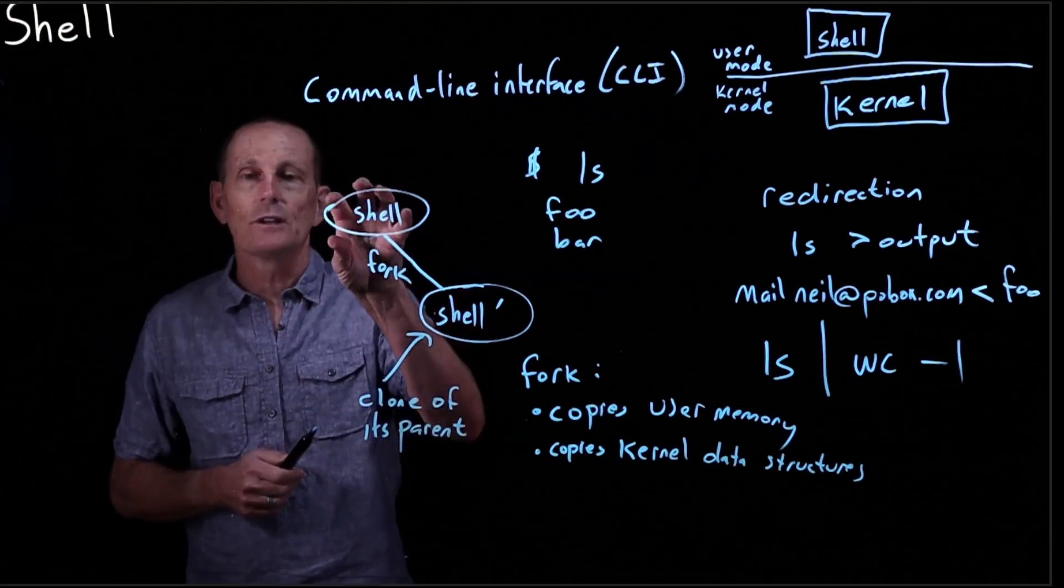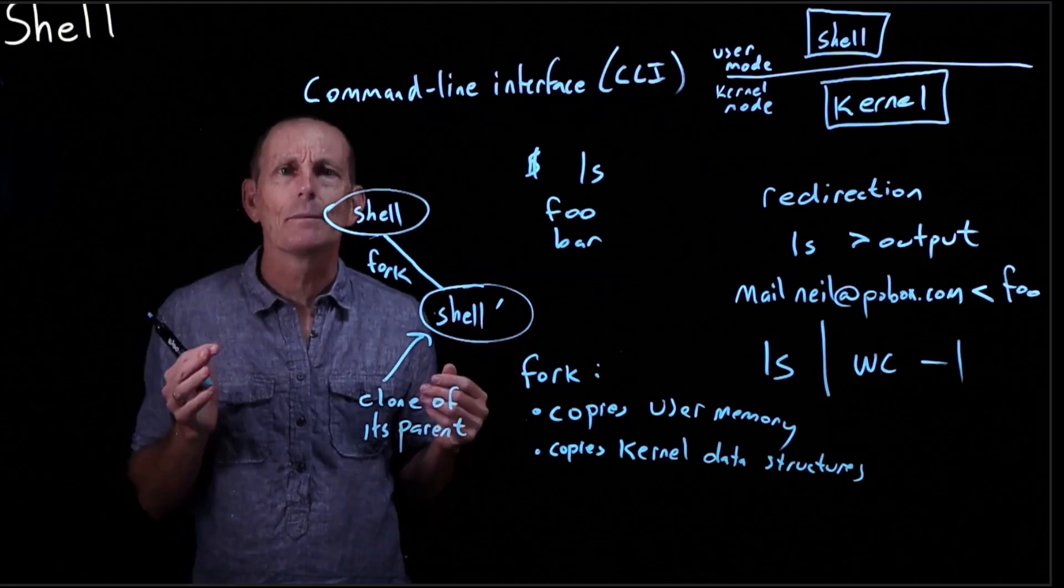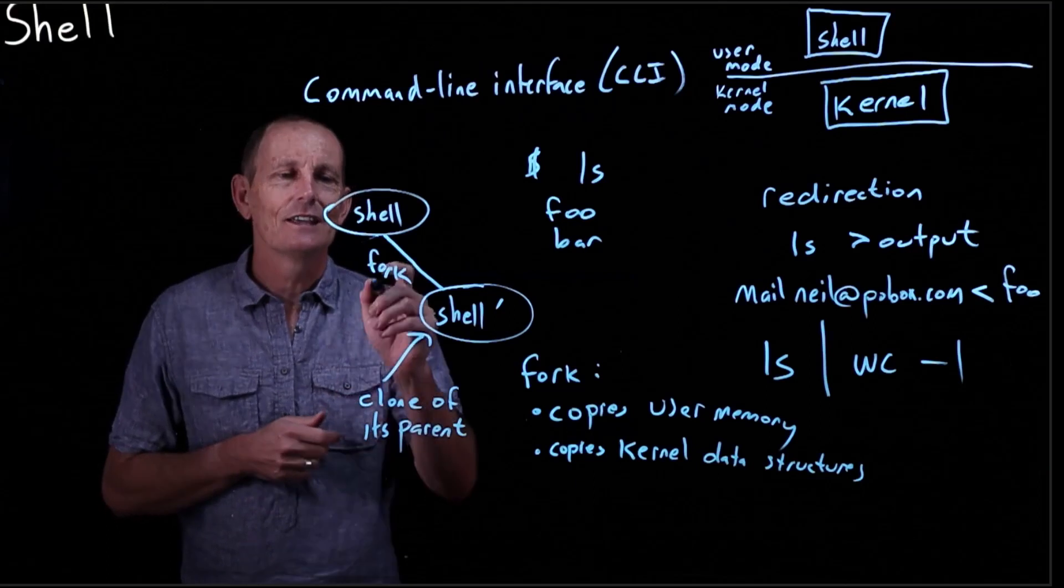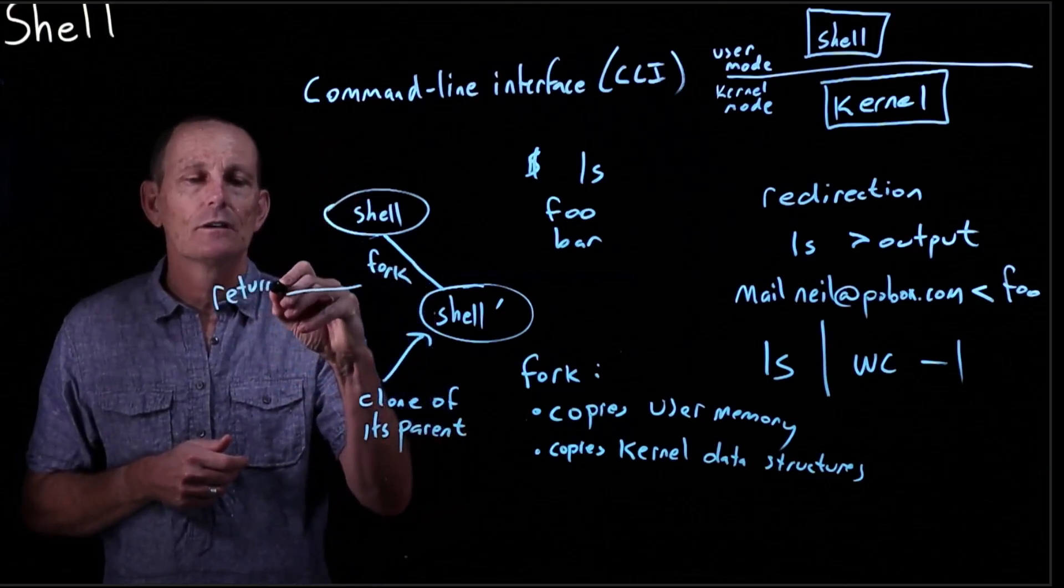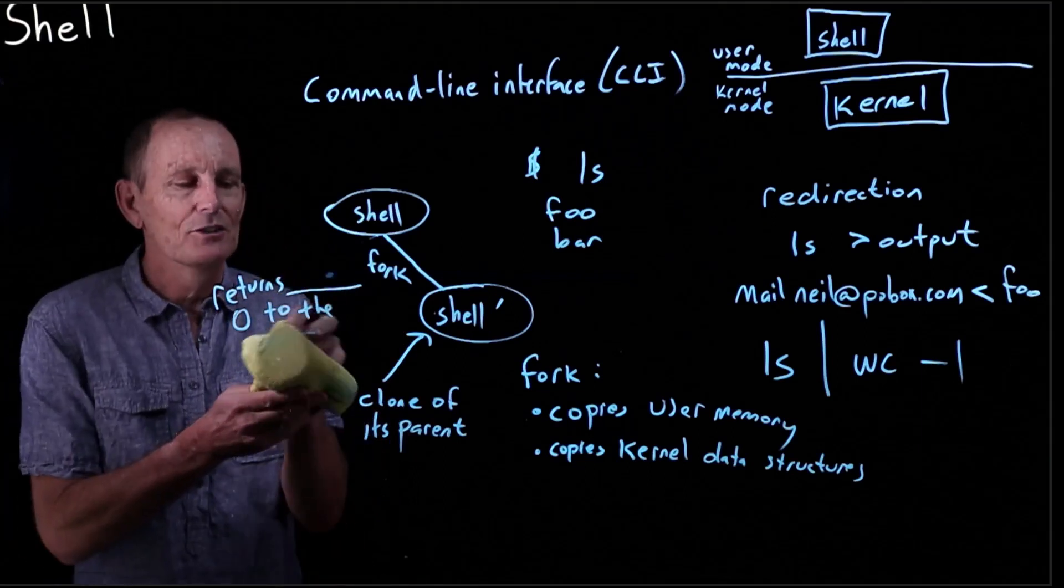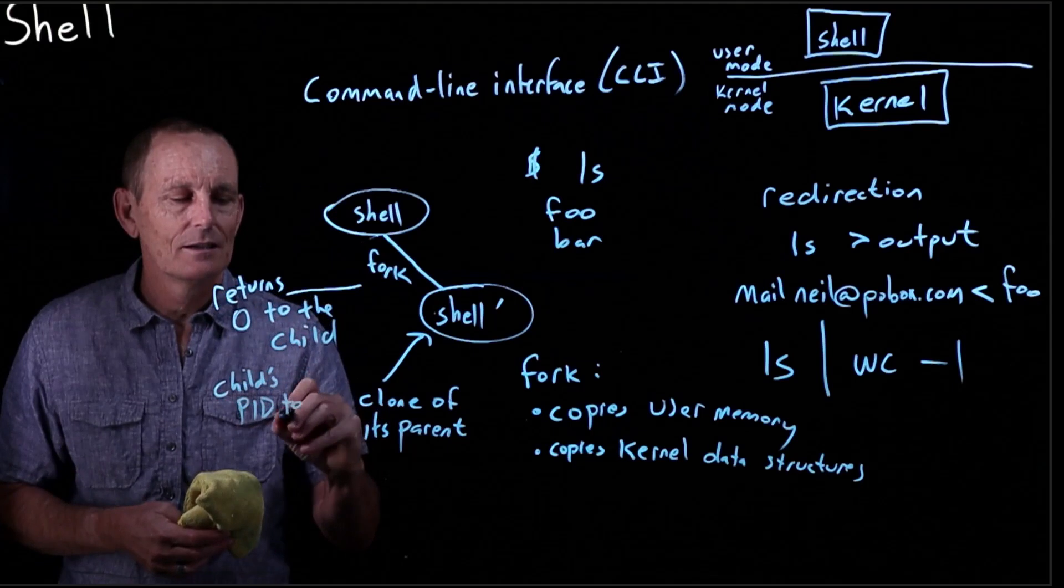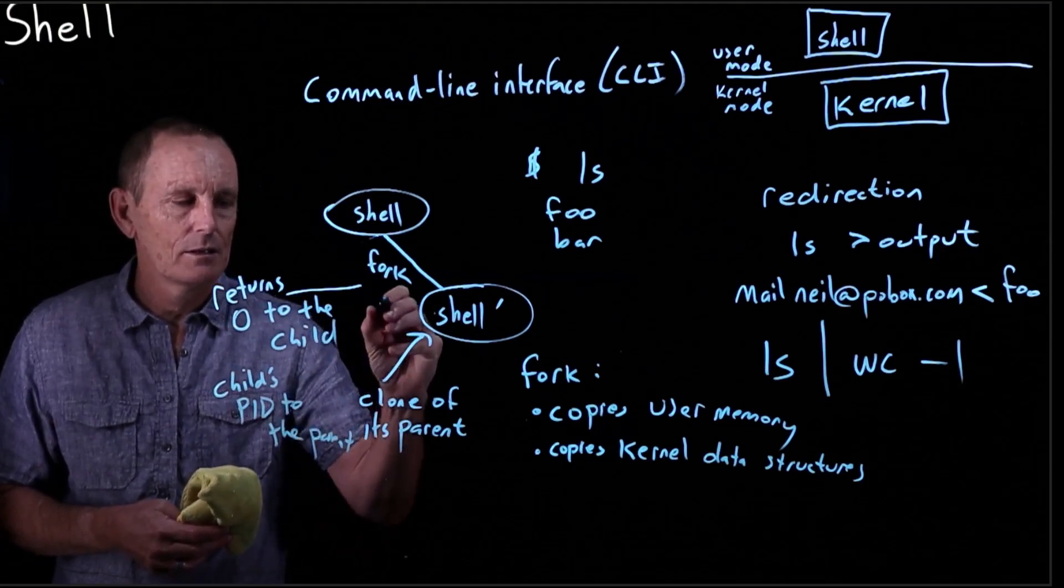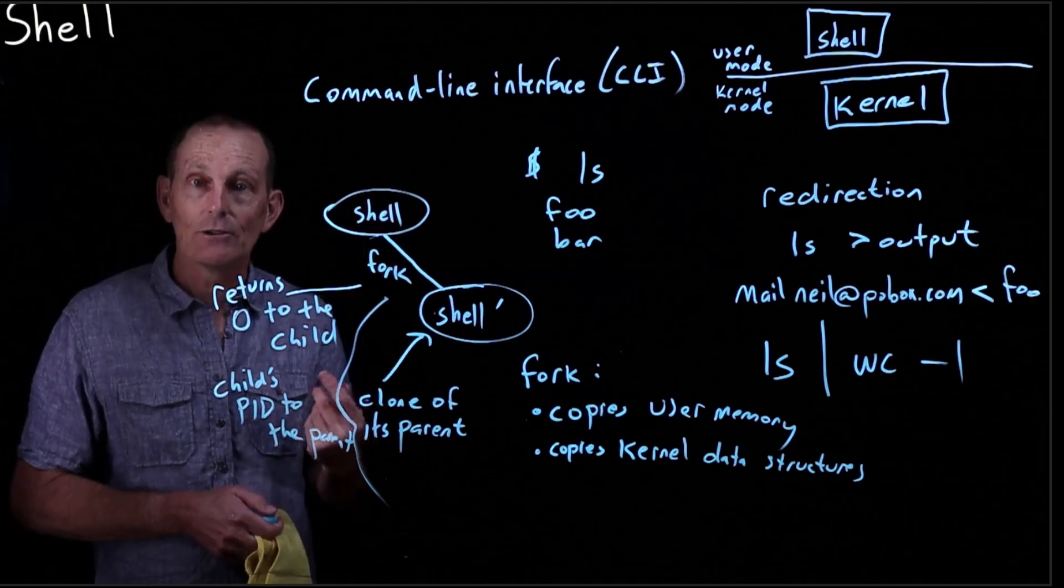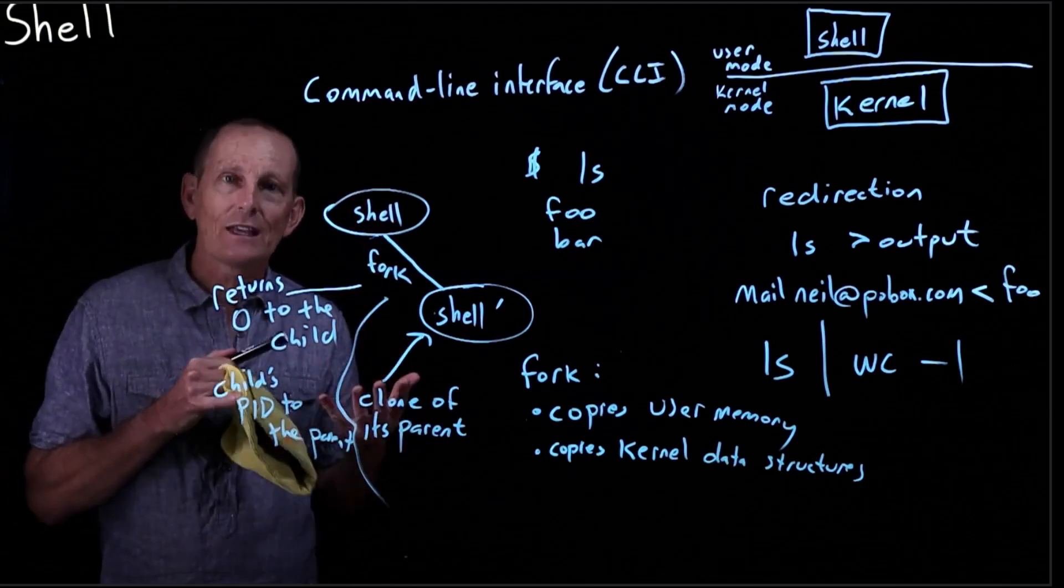They're both running the same program. So this gets to be kind of the question of how do you know which is the real one? It's sort of like when Kirk goes through the transporter and makes a copy of him. And now we have two Kirks, which is the real Kirk, and which is the duplicated Kirk. And the answer is that fork returns zero to the child, and returns the child process ID to the parent. So that way they can act differently. Basically, the shell could do a fork and then look and say, oh, did I get back a zero? Then I must be the clone, the new one. Did I get back a non-zero? Then I must be the parent. And that way they can check that value and do different things.